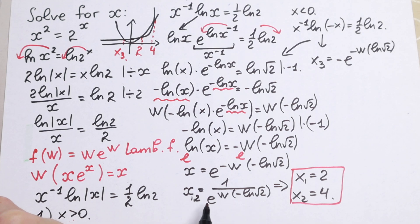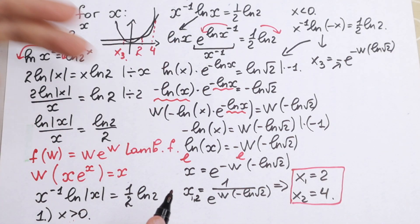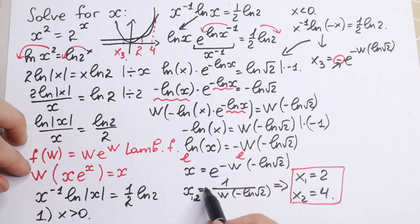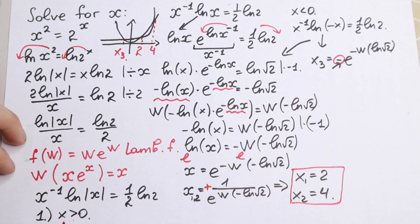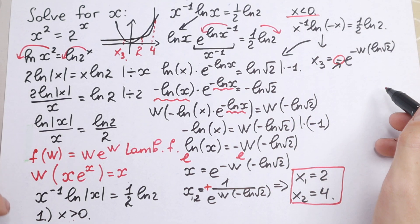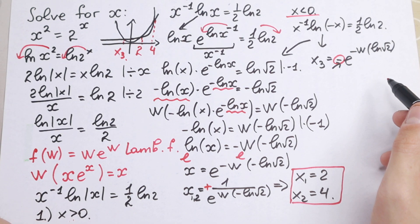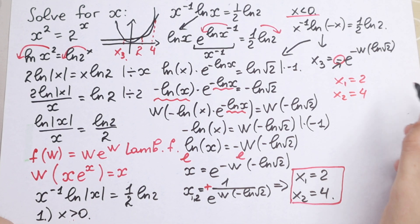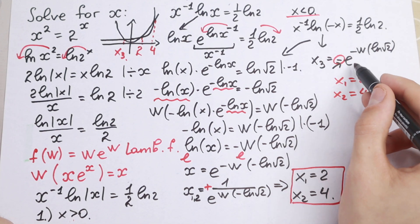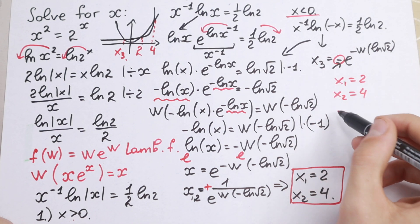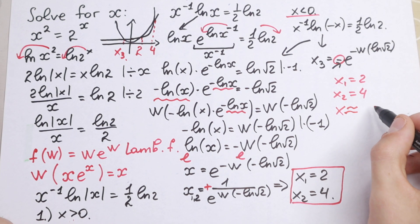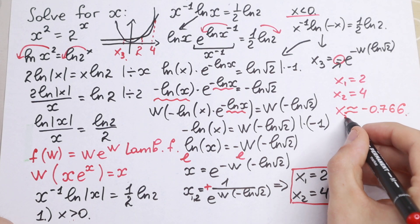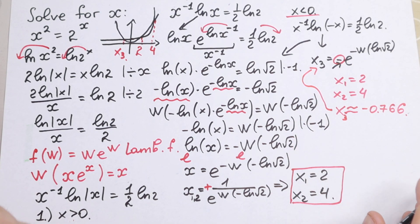As you can see, this is the same expression as before but with a minus sign in front, because x is negative. This root is not a natural number — it is a negative root. So: x1 = 2, x2 = 4, and x3 is approximately equal to −0.766.